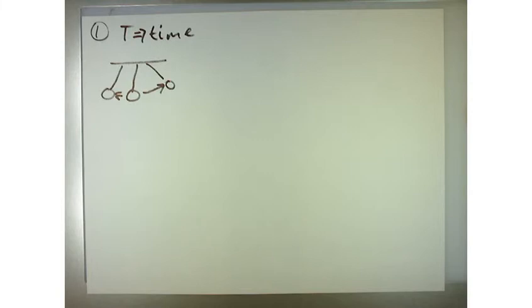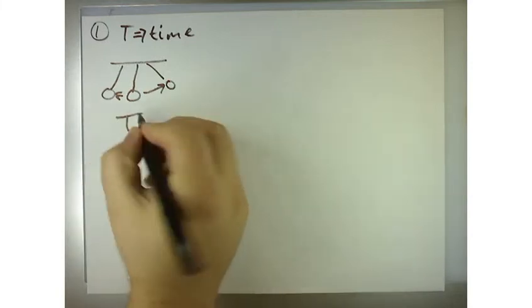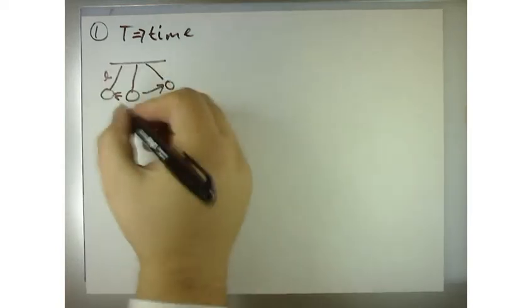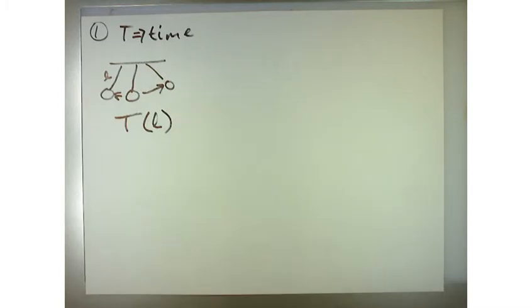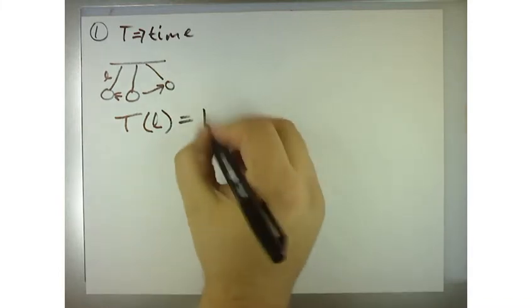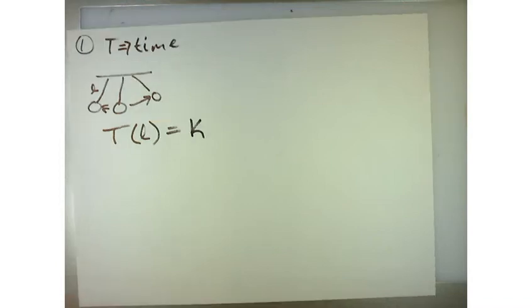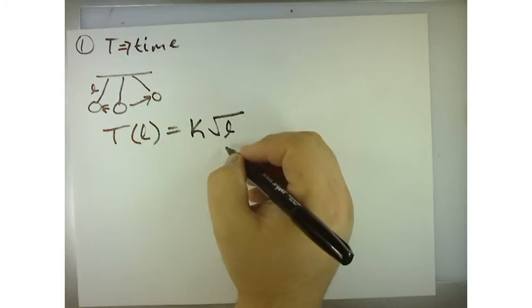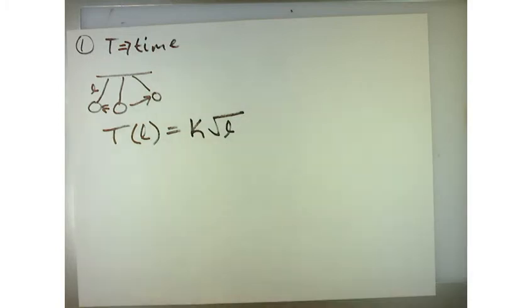So let me read that again. Basically we want to say that the time of this thing is a function of the length of the pendulum, where this is the length and the time is the cycle it takes to complete. From empirical evidence and the laws of physics, it has been found that the period of time t for a full swing of a pendulum varies as the square root of the pendulum's length. What they're saying is that it varies, which means it could be multiplied by some value K times the square root of the pendulum's length. And then it says write the relationship as a power function.